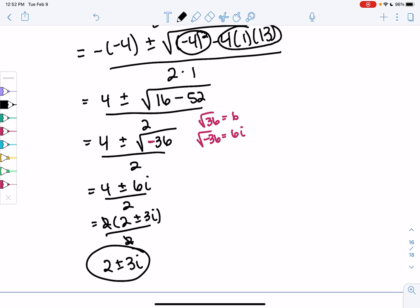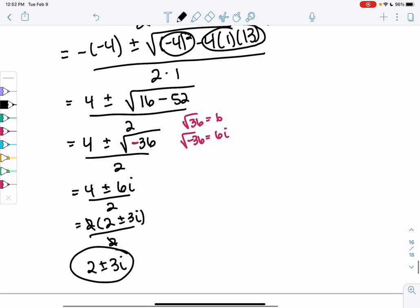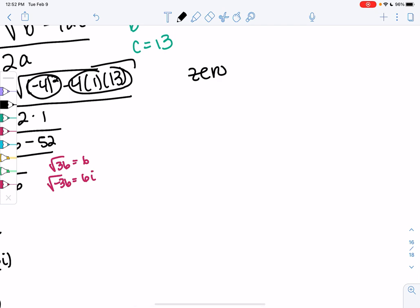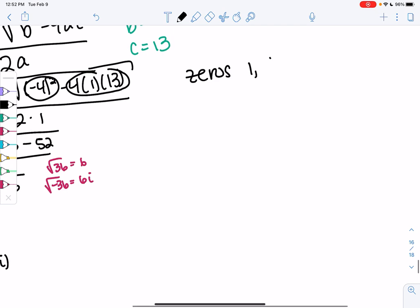So we're going to try to write those as factors. So we know our zeros are 1 from the beginning, 2 plus 3i, and 2 minus 3i. And there's only three zeros because we had x cubed. So we know we have all the zeros now for 3 degrees, 3 zeros. And then we're just going to write it in complete factorization.